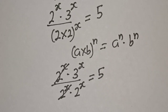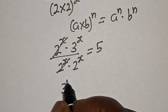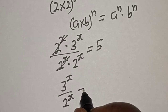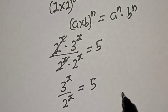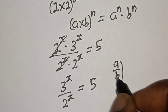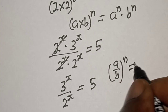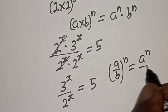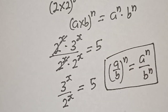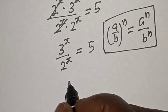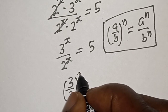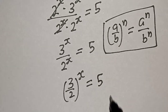This will cancel this. We have 3 raised to power x over 2 raised to power x is equal to 5. Also take note that if you have a over b raised to power n, this is equal to a raised to power n over b raised to power n. So this becomes 3 over 2 raised to power x is equal to 5.